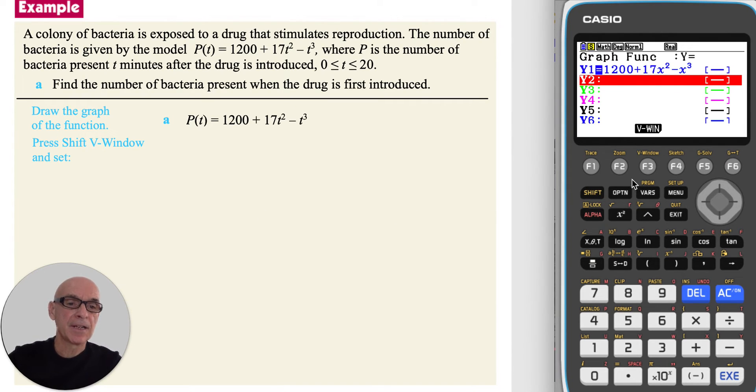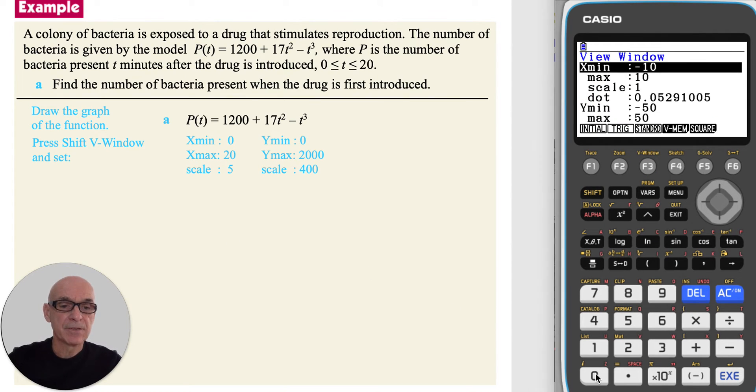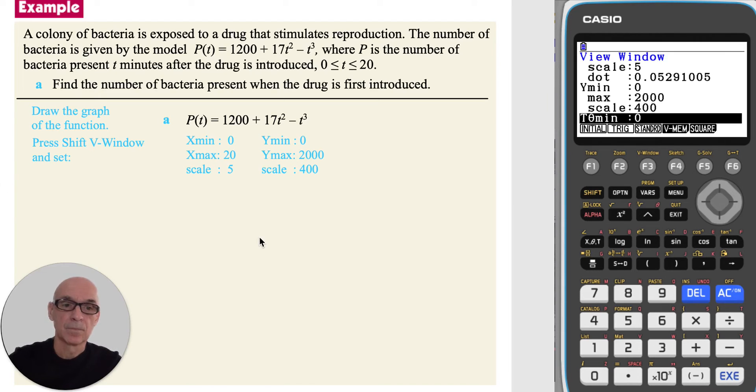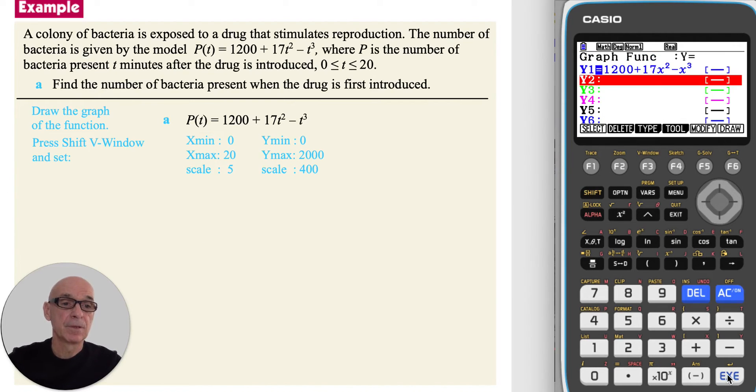Pressing shift, and then f3 to access view window. Pressing 0, setting x min to 0, and x max to 20, as that's the domain of the function given, and with a scale of 5. Scrolling down, and setting a y min to 0, and a y max to 2000, and a y scale of 400. Pressing execute.